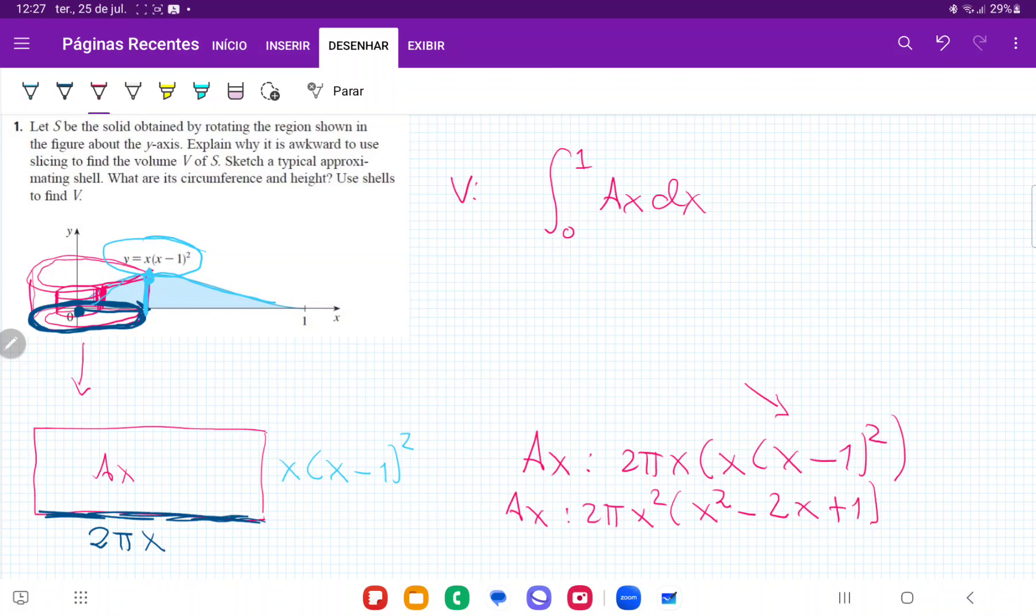And then when I multiply everything out, this is going to give me 2π, I'm going to leave that outside because it's a constant, and then x⁴ - 2x³ and then plus x². So that is my A(x).